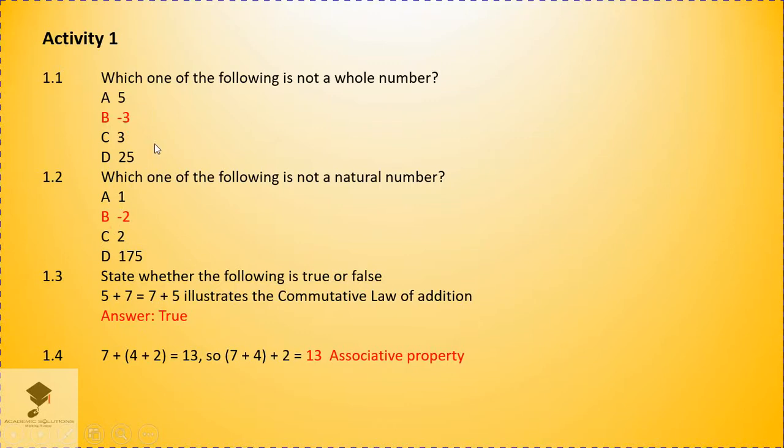So, the first one, which one of the following is not a whole number? Now, remember what we said about whole numbers? We said they start from 0, 1, 2, 3 up until infinity. So, anything below 0 is not a whole number. So, in this case, we have option A, which is 5, option B, which is minus 3, option C, which is 3, and option D, which is 25.